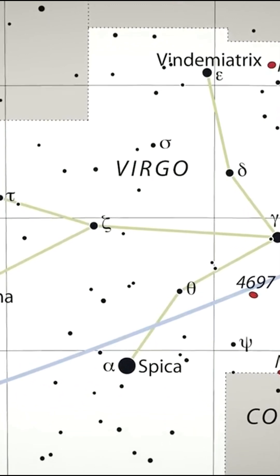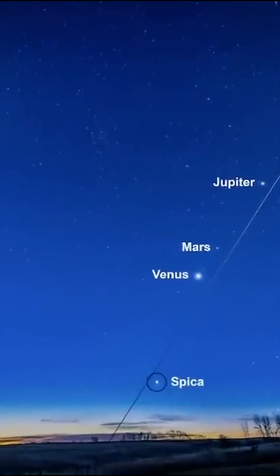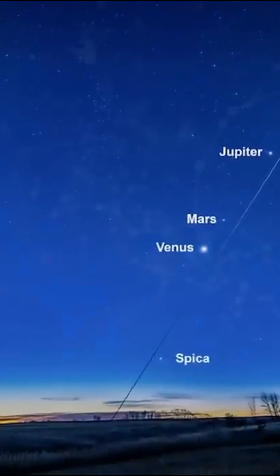The most infallible way to find it is to locate the star Spica. This is the brightest star in the constellation Virgo, and the 15th brightest in the sky.